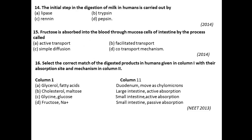Question number fourteen: The initial step in the digestion of milk in humans is carried out by? Rennin is the enzyme that is essential for the digestion of milk, especially in the initial stages. So option C is the right answer for this question.